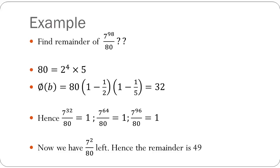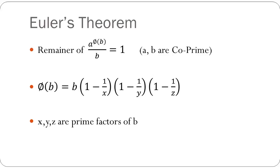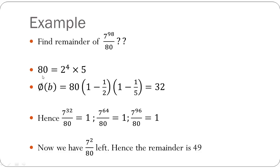So now we find the Euler's totient, which is phi of b. And as we saw, phi of b is given by b times (1 minus 1/x) times (1 minus 1/y) and so on. However many prime factors b has, that many brackets will be here. So suppose b has 2 prime factors, there will be just (1 minus 1/x) and (1 minus 1/y). Here, 80 has 2 prime factors which are 2 and 5. Hence phi of b equals 80 times (1 minus 1/2) times (1 minus 1/5), and this comes out to be 32.